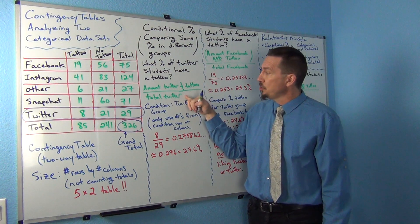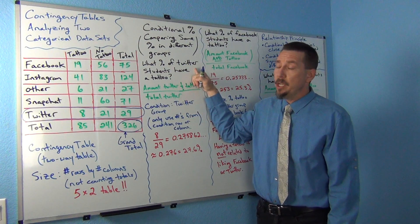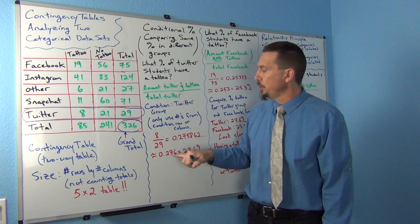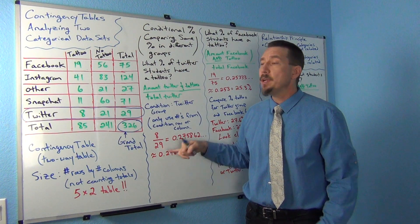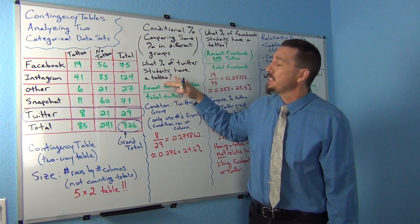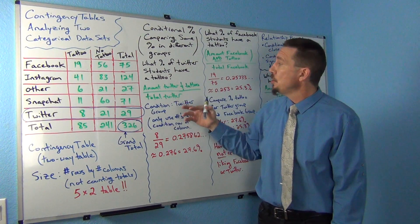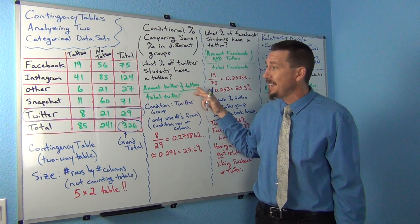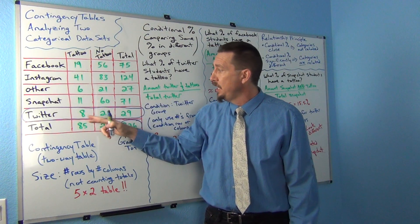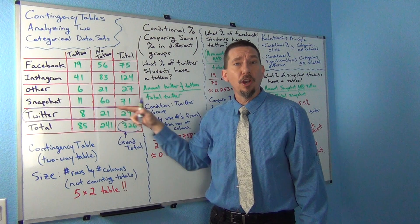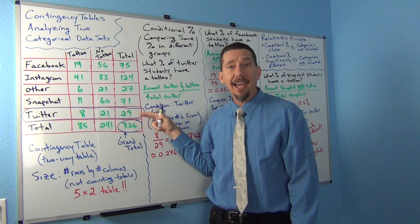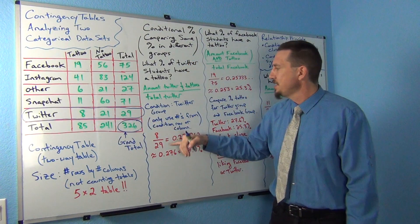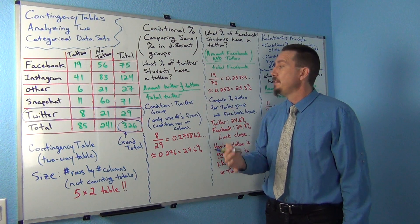The formula uses the Twitter total, not the grand total. The total for Twitter is 29, so that's my denominator. For the numerator, I want the amount that have a tattoo within the Twitter group — that's the intersecting cell where Twitter and tattoo meet, which is 8. So 8 out of 29 gives us the percentage of Twitter students that have a tattoo.